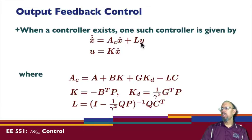Then we have the observer gain times y and k times x-hat. So, k, again, is minus b transpose p. kd is 1 over gamma squared g transpose p. And now, our observer gain is given by this quantity. 1 minus 1 over gamma squared qp quantity inverse times qc transpose.